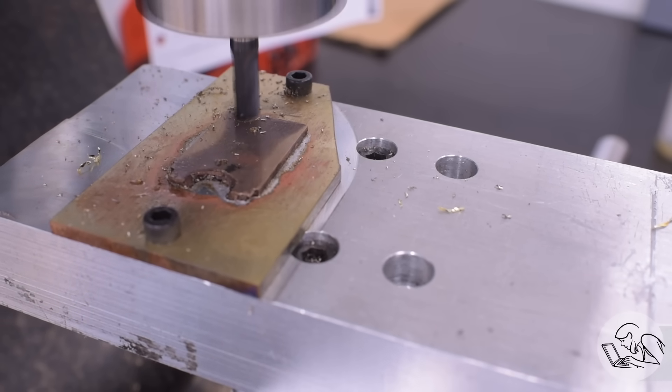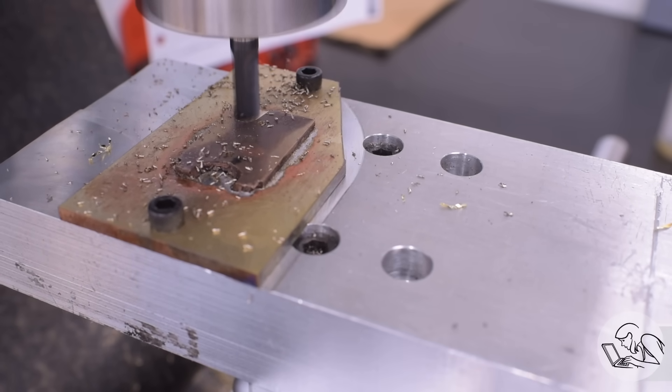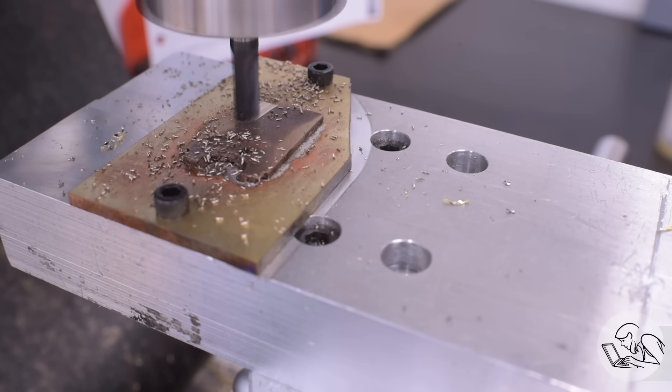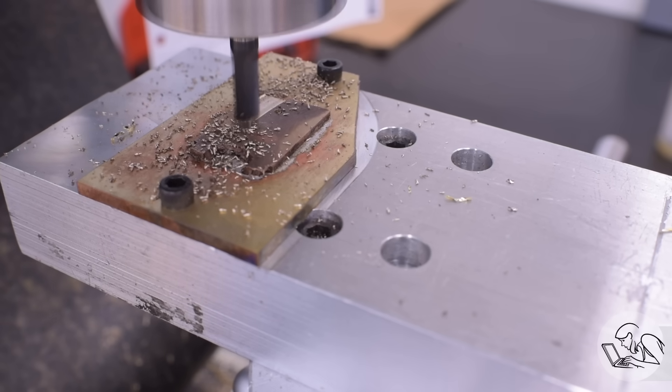That, my friends, is how an end mill should be cutting in bronze. That's what it's supposed to look like. No big mushroom burrs getting pushed up everywhere. Just nice clean chips. This is going much better already.